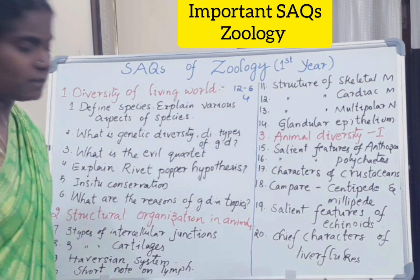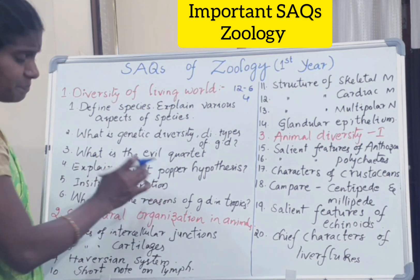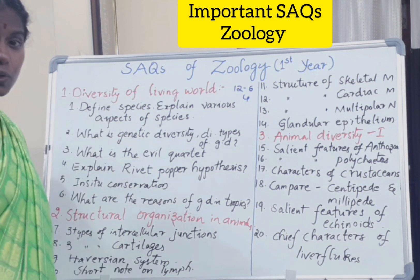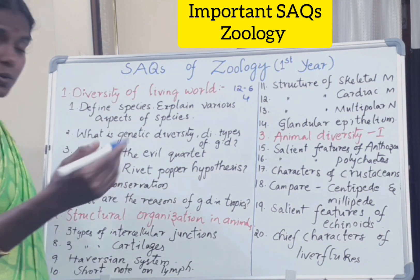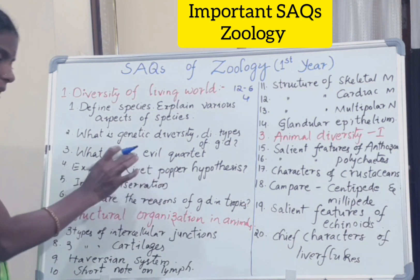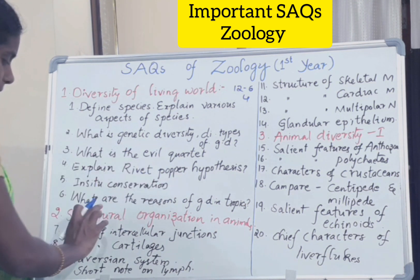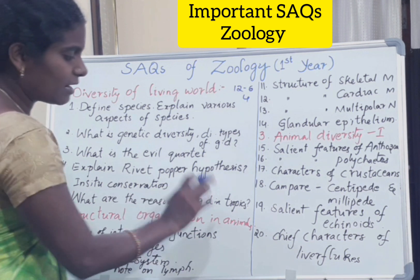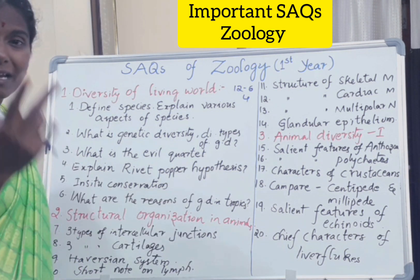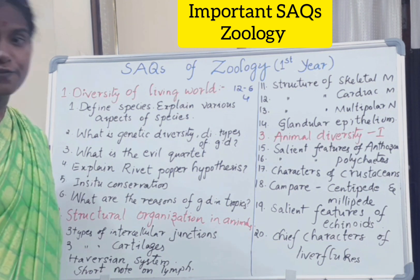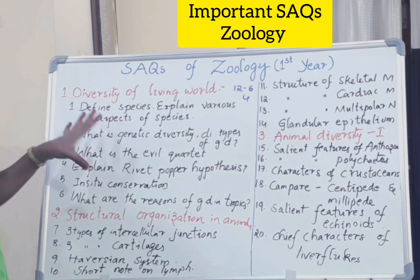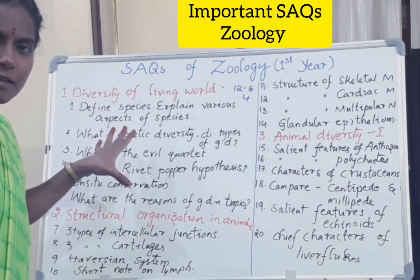Next: in situ conservation, which includes biodiversity hotspots and sacred groves — there are 4 to 5 headings and this is also a very easy and important one. Next: what are the reasons for greater diversity in the tropics? You should write the reasons, including climatic conditions and availability of resources. These are the 6 important questions I am giving you from the first chapter.